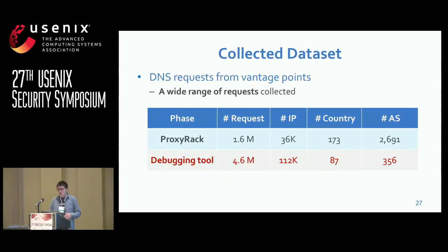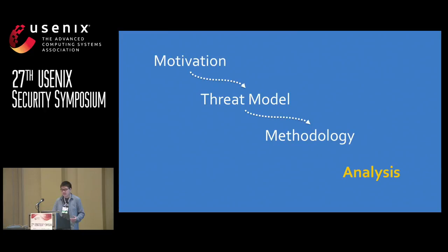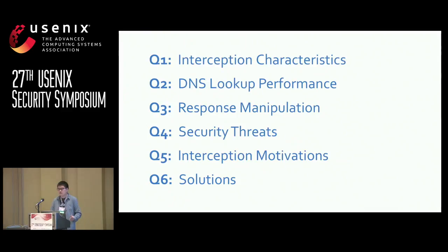After solving all those challenges, we are able to collect diverse DNS requests from vantage points all over the world. Our 100,000 clients are located in more than 170 countries and 3,000 ASes. Due to timing limitations, I will use the results collected by our debugging tool for the DNS interception analysis. Here are some results — we are focused on characteristics of the DNS interception and influences on DNS lookup performance. We also perform analysis on DNS response manipulation and security threats.